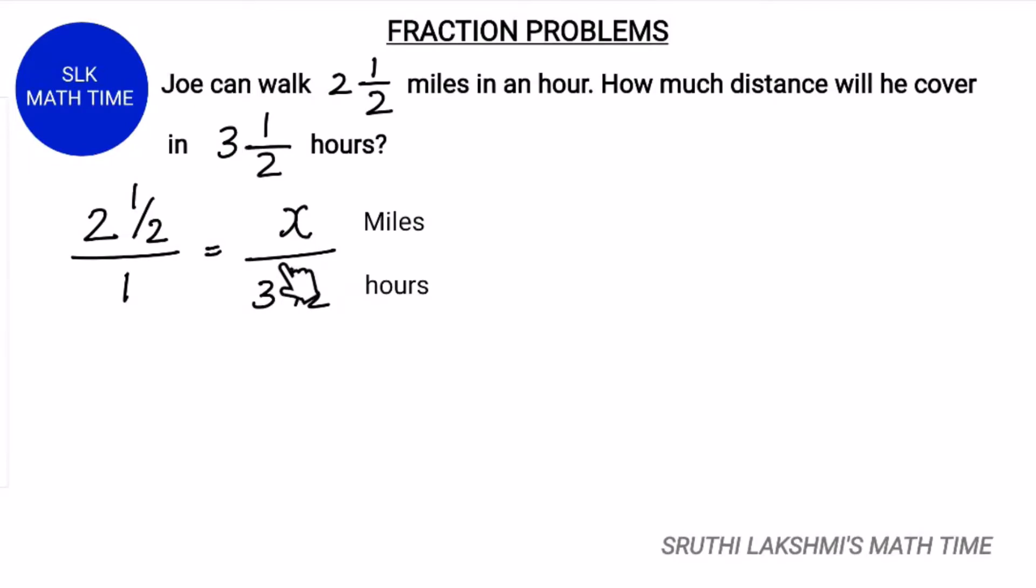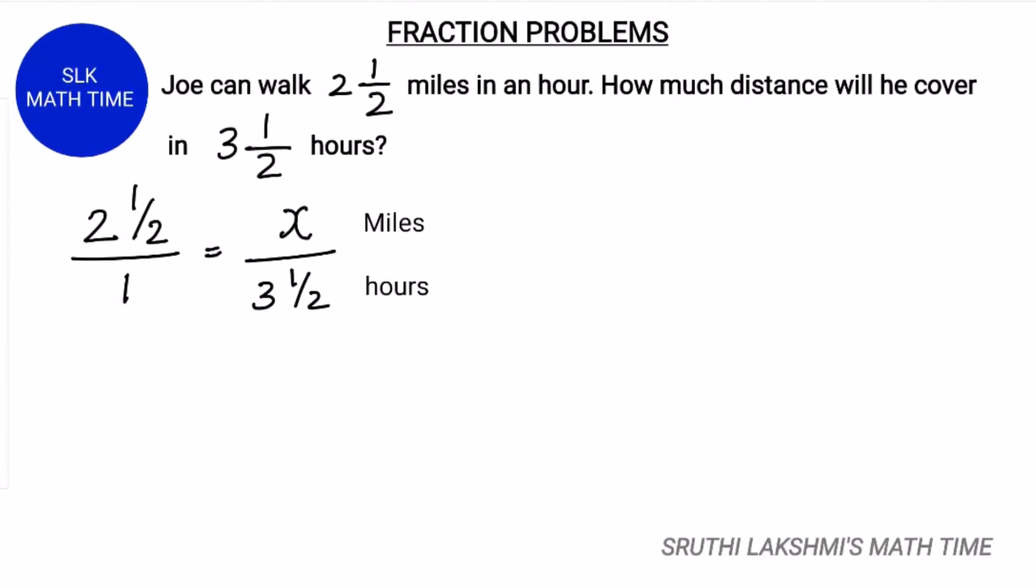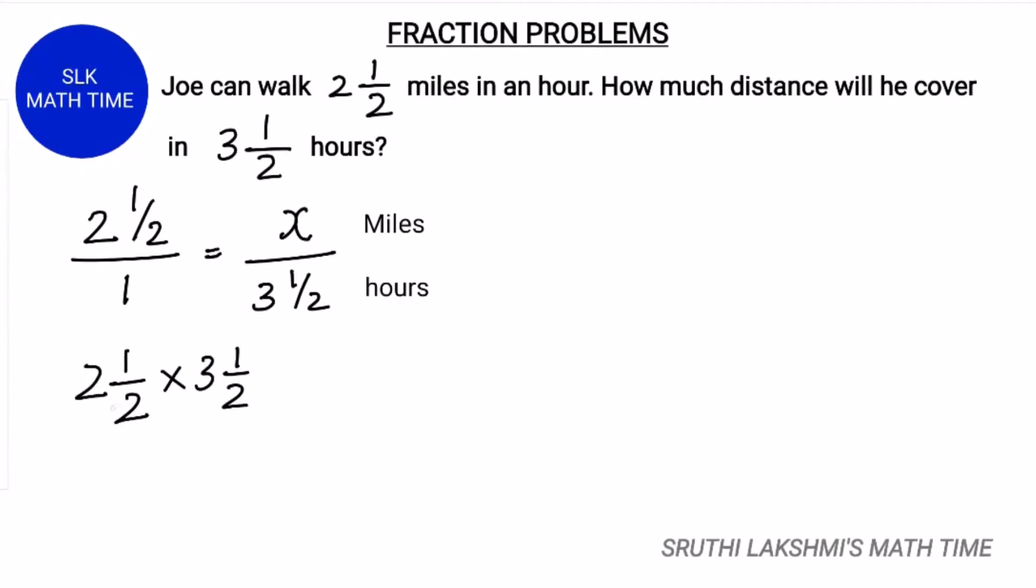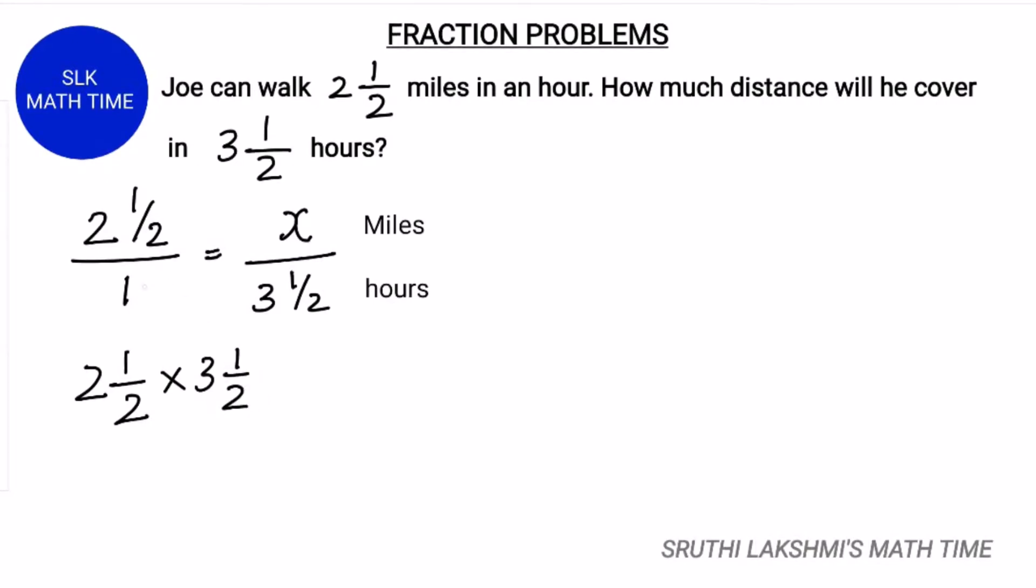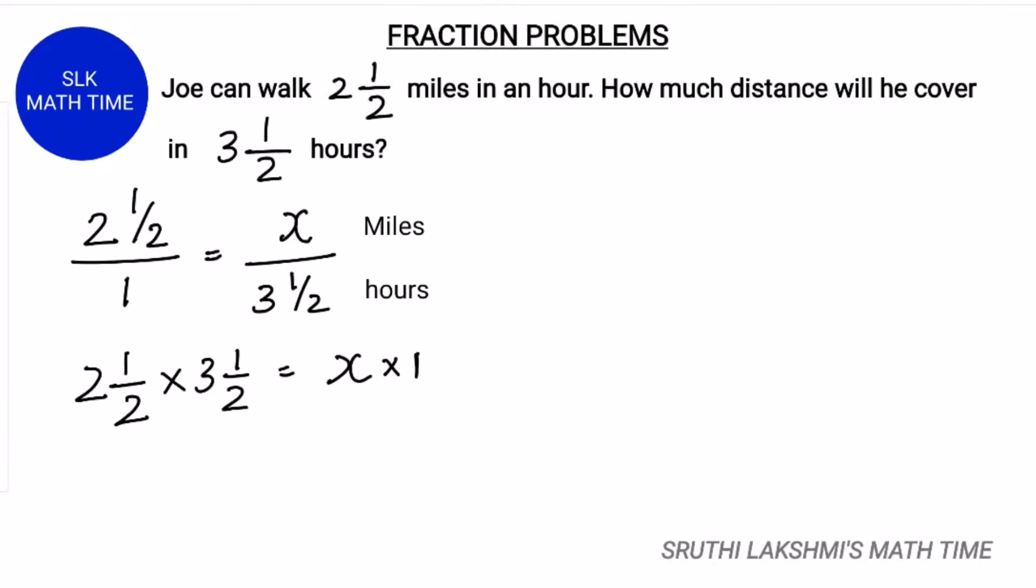So when we bring this 3½ to the other side, it becomes the numerator. So it's 2½ into 3½. Next when we bring this 1 to the other side, it becomes times 1. So it's x times 1.